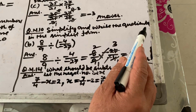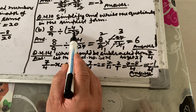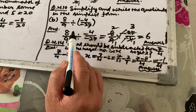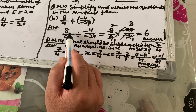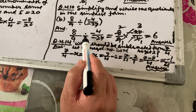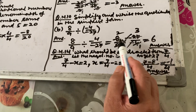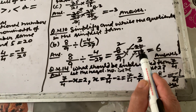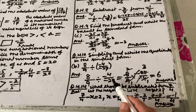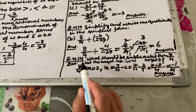Simplify and write the quotient in the simplest form. We have 8/9 divided by a fraction. To divide fractions, we write the first fraction as 8/9, change the division sign to multiplication, and reverse (take the reciprocal of) the second fraction: 8/9 × (−27/4). After cancelling common factors, the answer is 6.